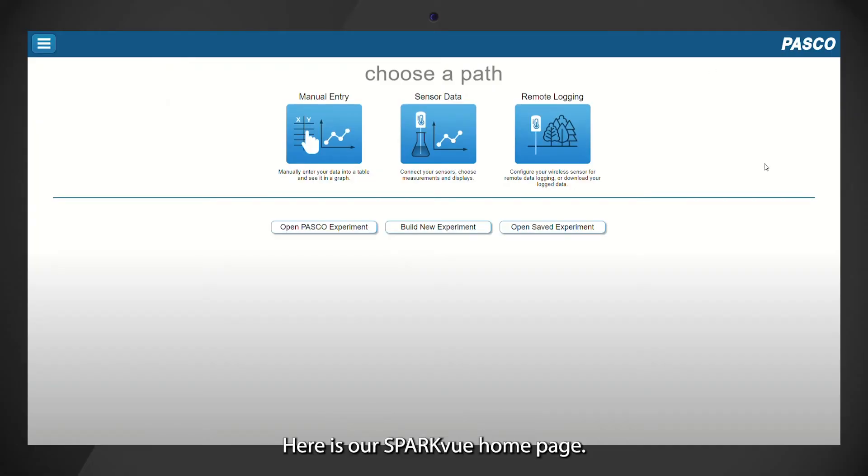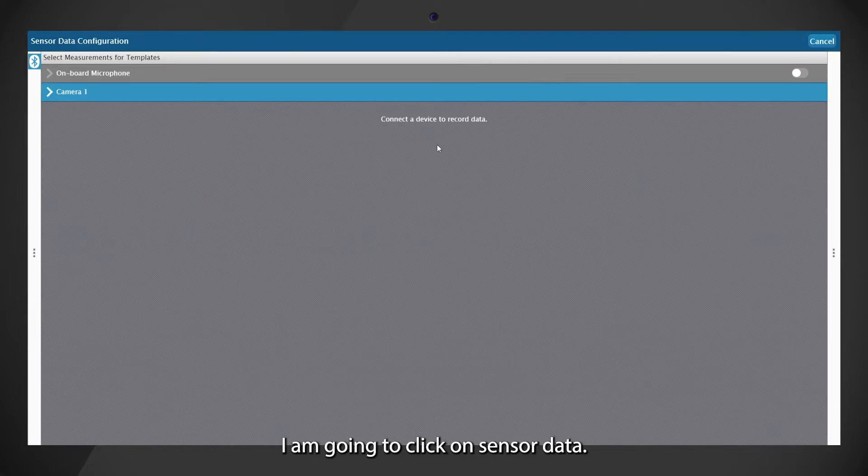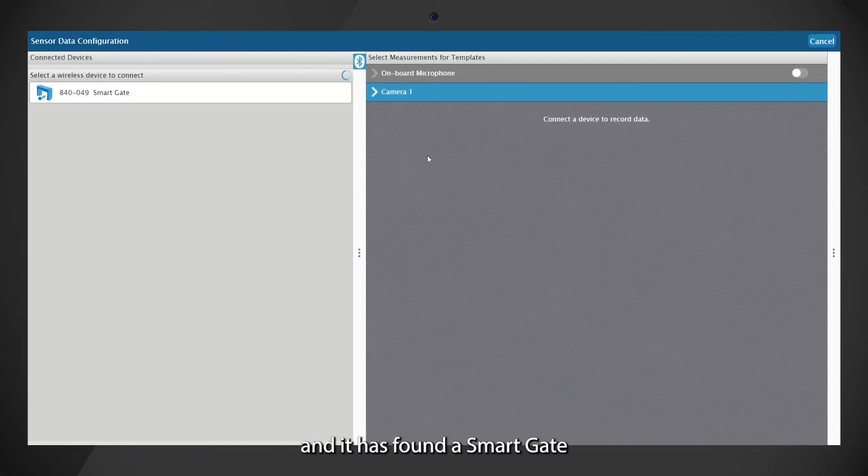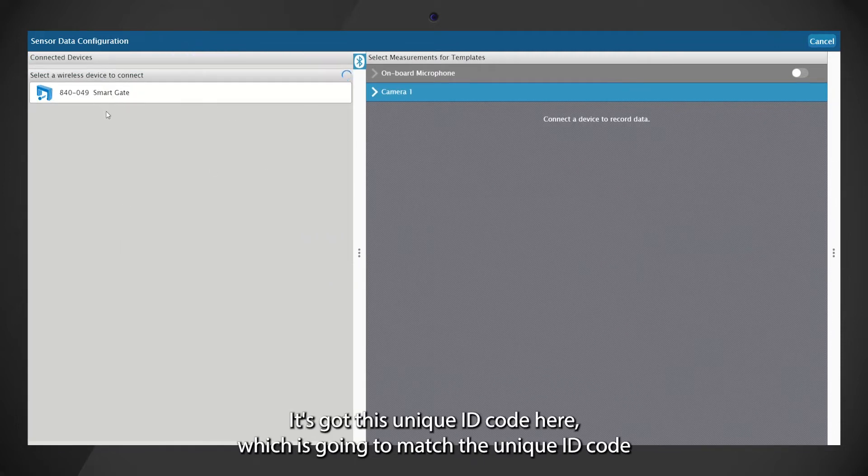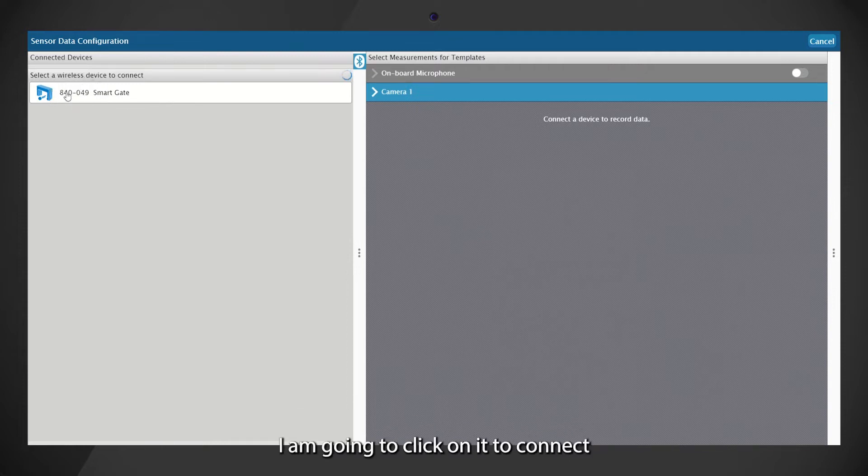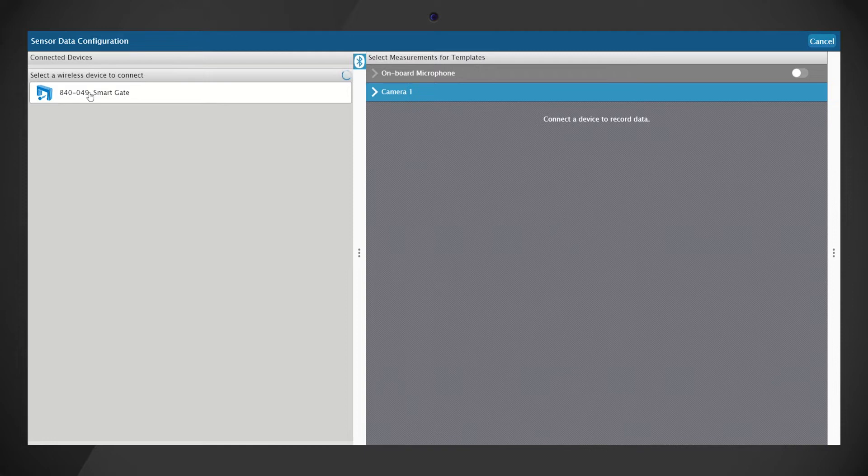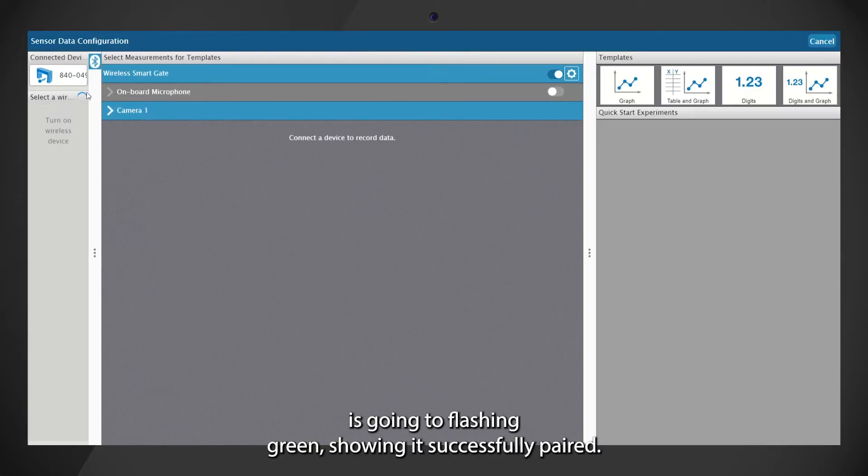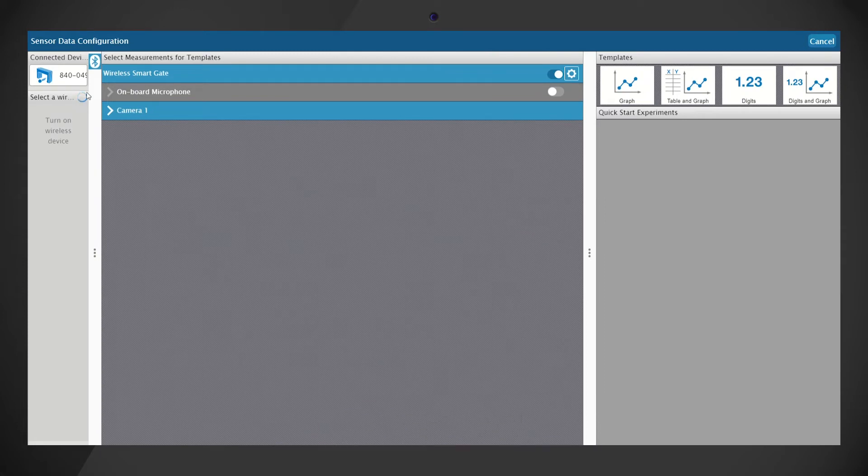Here is our SparkVue home page. I am going to click on sensor data. It's going to look for the PASCO devices in the room and it's found a smart gate. It's got this unique ID code here which is going to match the unique ID code on the front of the unit. I am going to click on it to connect and once it's connected the status LED on the front of the unit is going to flash green showing that it's successfully paired.